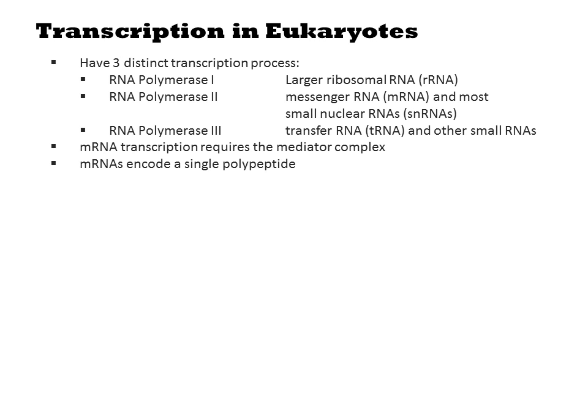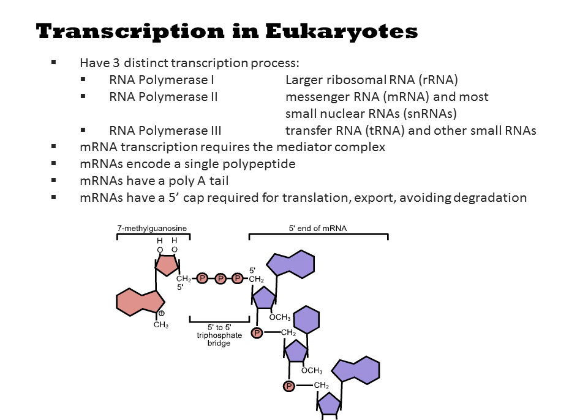mRNAs encode a single polypeptide instead of multi-gene operons, and they have a polyA tail on the 3' end. They also have a 5' cap required for translation, export, and avoiding degradation. On a prokaryotic mRNA, you just end it on the 5' end with a triphosphate, but there's this additional 7-methylguanosine on the ends of an mRNA in a eukaryote.